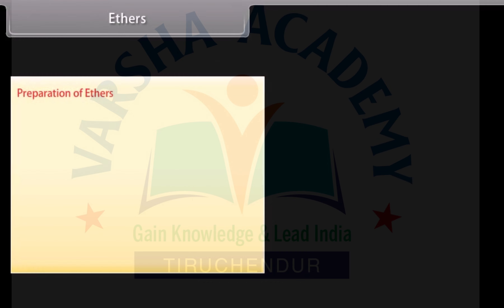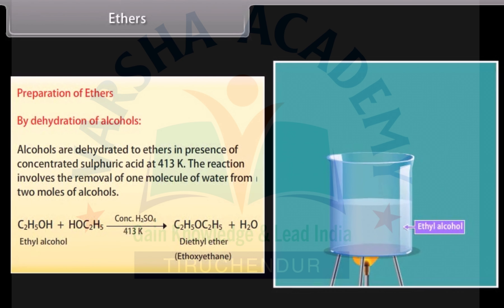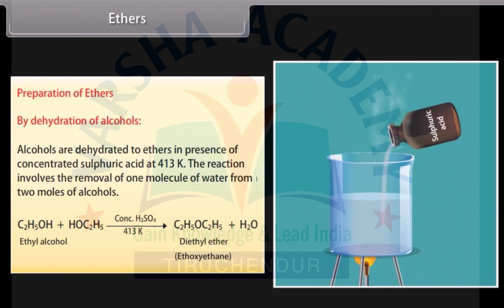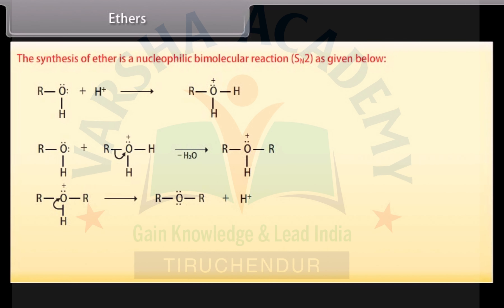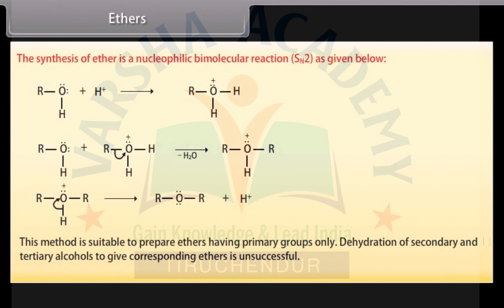Ethers - Preparation. By dehydration of alcohols: alcohols are dehydrated to ethers in the presence of concentrated sulfuric acid at 413 Kelvin. The reaction involves the removal of one molecule of water from two moles of alcohol. The synthesis of ether is a nucleophilic bimolecular reaction. This method is suitable to prepare ethers having primary groups only; dehydration of secondary and tertiary alcohols to give corresponding ethers is unsuccessful.